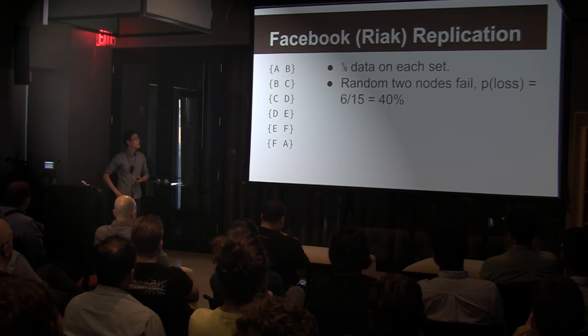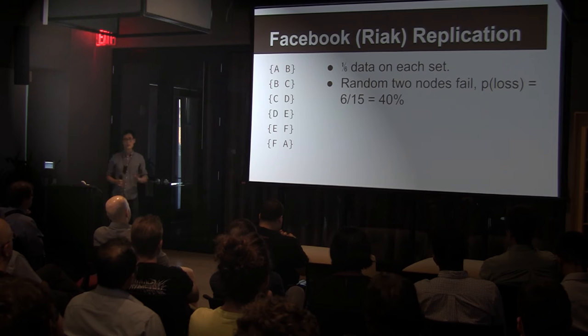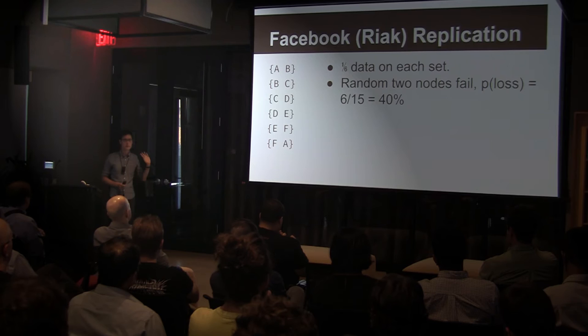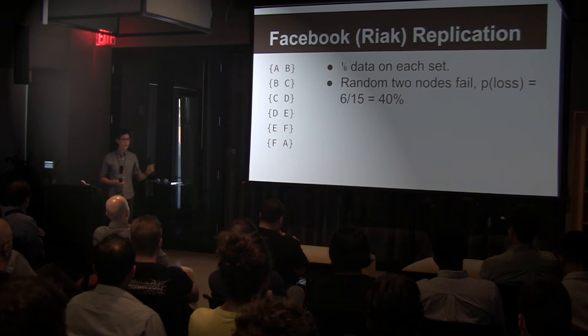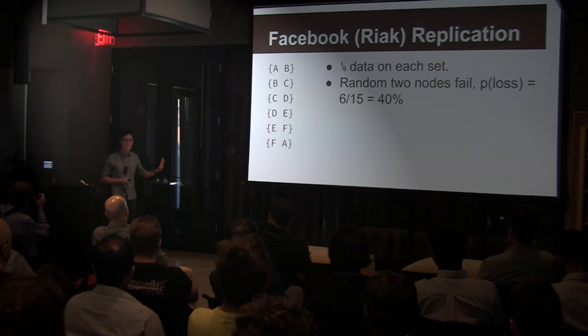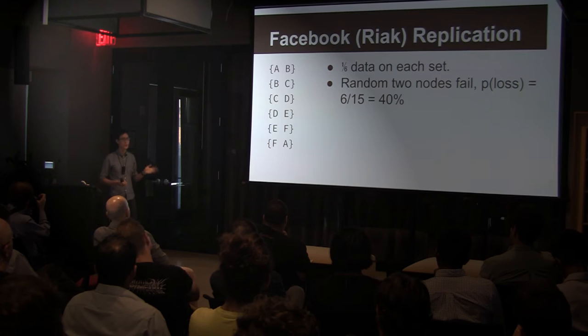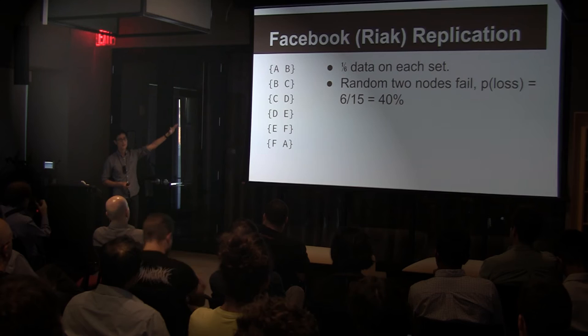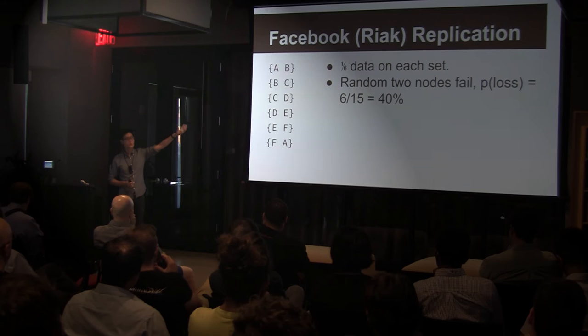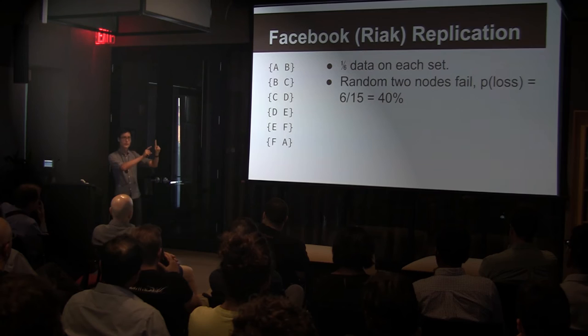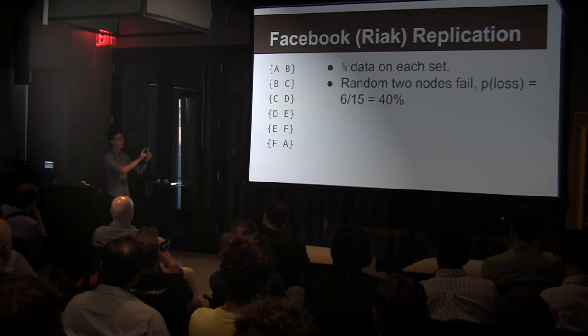Facebook replication is a little different. According to the paper, Facebook modified their version of HDFS to take a different strategy — the idea is to restrict the number of sets you actually use. Rather than picking two servers at random, you say one set is A and B, the next is B and C, then C and D, and so forth. If you order all the nodes A, B, C, D, E, F, the sets are basically adjacent nodes. This is actually how Riak works — Riak has the notion of a ring.